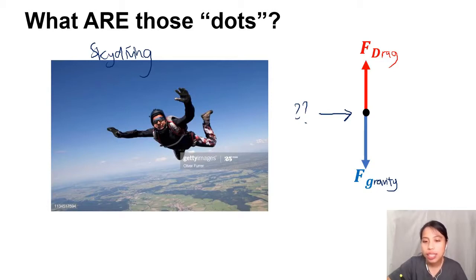That dot, we can say, in simple terms, is some point on this man's body. Maybe here, perhaps? And we say, we'll use that point to represent the whole man, and then draw forces from there.